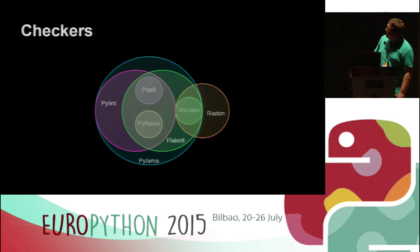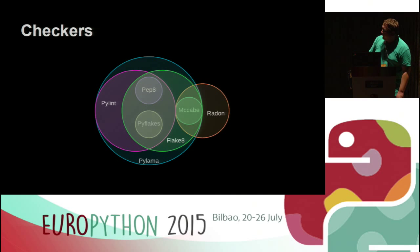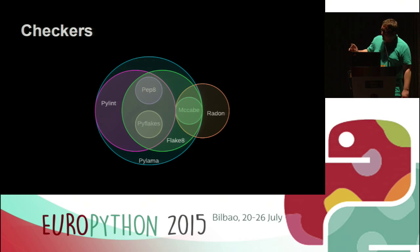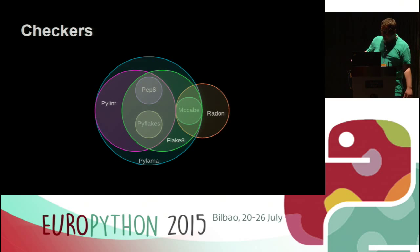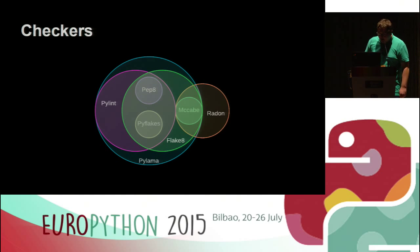Here is a graph of various checkers. You probably know all of them or nearly all of them — there was a talk about Radon yesterday. This graph presents how these checkers are contained in each other, meaning that a checker that contains others is also checking what the smaller ones check. So we see that we have one big checker, PyLama, and smaller ones. I will talk about all of them.